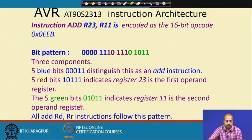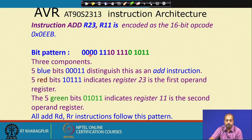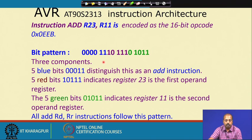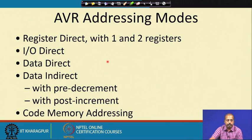All RD, RR instructions will follow this pattern and have a coding like this. This 0 is redundant — it is extra, nothing is there, so that is taken as 0. All instructions will be coded like this.